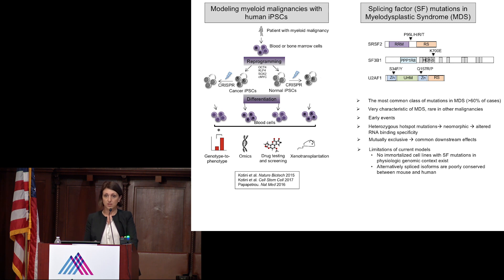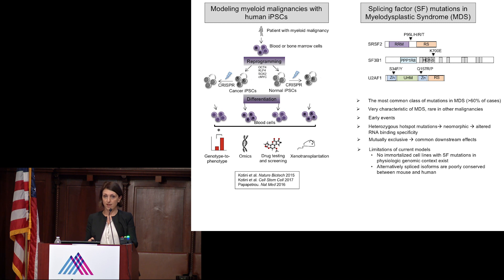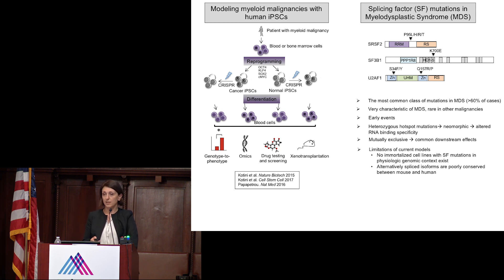We can differentiate them into blood cells to study their phenotypes. In parallel, we're using CRISPR gene editing to either correct or introduce specific mutations in respectively mutant or normal iPSCs, thereby generating perfectly isogenic conditions that are ideal to ask questions about the effects of specific point mutations in cells that only differ in the genome by one specific point mutation. We use this system to study many interesting questions in cancer biology and precision oncology, both basic and translational.